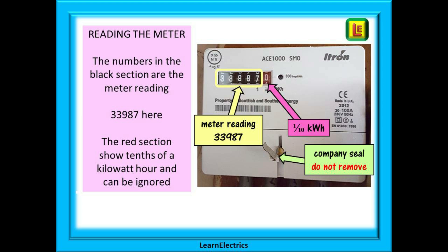Here is a typical digital meter. The numbers in the black section are the meter reading used to calculate the bill — this meter is showing a reading of 33987 today, and the previous reading was recorded three months ago. The red section shows tenths of a kilowatt hour and can be ignored for billing purposes. Also shown is the company seal used to deter tampering with the supply; this seal should never be removed.